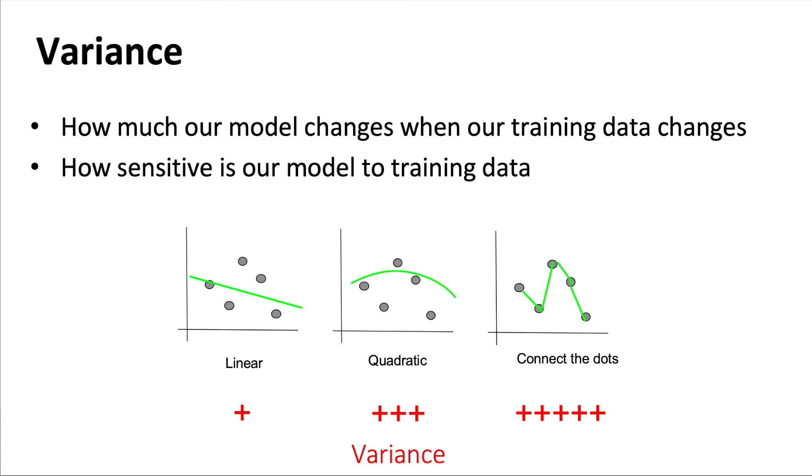So here in the same three models, we can see that the connect the dots approach has the biggest variance in this case, because if we change some of the training points in this approach, the model will change a lot.